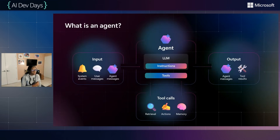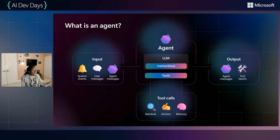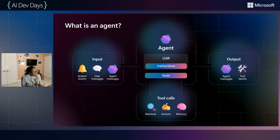Let's start from the beginning. What is an agent? Beyond being the buzzword of the year, at its core, an agent is simply a program where you allow an LLM to help you decide the control and flow of the program. Think of it like a microservice that executes on a task and achieves a specific business outcome. But in the world of AI, the program goes from being deterministic to non-deterministic.